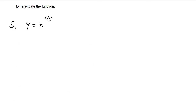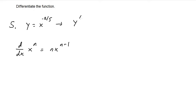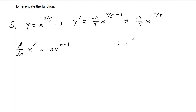For number 5, y equals x to the negative two-fifths. Since n can be any real number, we still use the power rule: bring the negative two-fifths down and subtract 1, giving negative two-fifths times x to the negative two-fifths minus 1, which is negative seven-fifths. So y prime equals negative two-fifths x to the negative seven-fifths, or equivalently negative 2 over 5x to the seven-fifths.